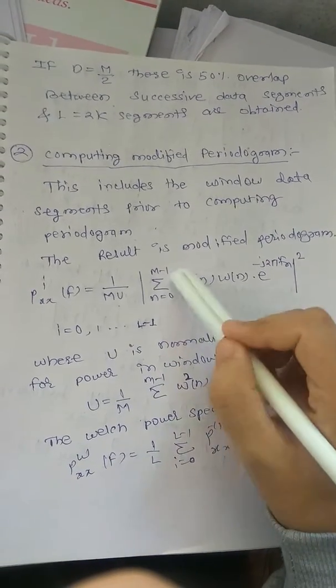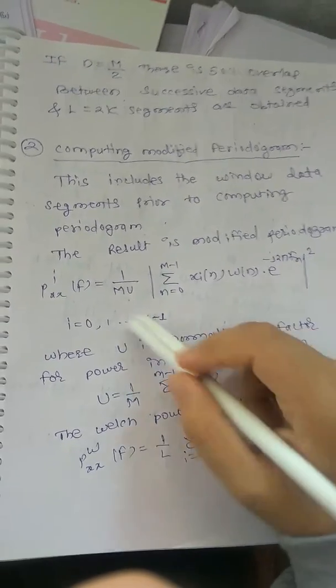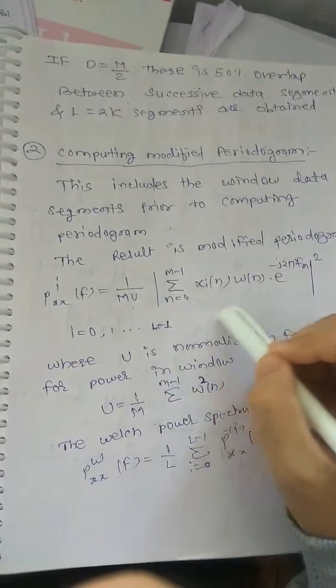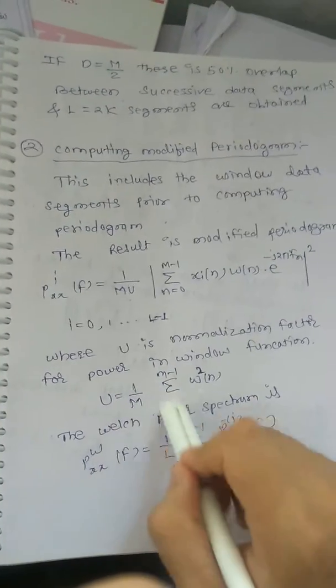Summation: square of summation 0 to M-1 of x_i(n)w(n)e^(-j2πfn), i = 0 to L-1, where U is the normalization factor for power in window function.